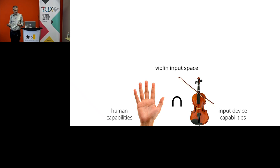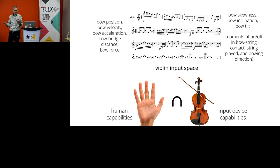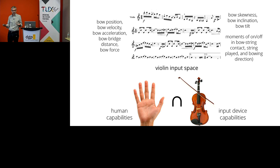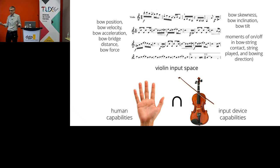If you think about the violin's input space, there are all these different dimensions — how you hold the strings, how you use the bow — creating a really complex input space that allows you to be very expressive. You can play a violin in different ways to communicate through music. And my argument is that this is the kind of achievement we want with computer input devices as well — to really express ourselves and use the full capabilities of our bodies and minds.